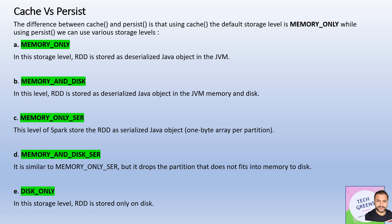The only difference between the two APIs is about the storage level — in cache, the storage level is fixed as MEMORY_ONLY by default. Now let's quickly look at the five storage levels provided by Apache Spark. The first one is MEMORY_ONLY, which is the default when we call the cache API. In this storage level, the RDD or DataFrame is stored as a deserialized Java object in the JVM heap memory.